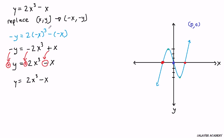After we switched, replaced x,y with negative x and negative y, we see that we get the same equation that we started with. And if this is so, it's passed the test of origin symmetry.